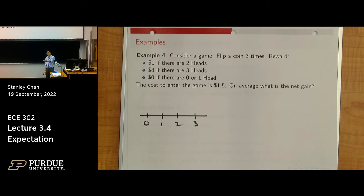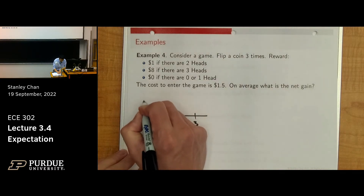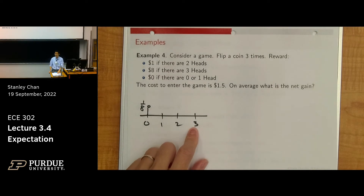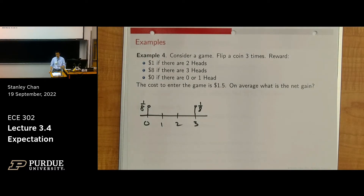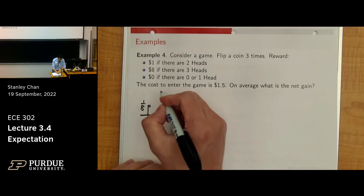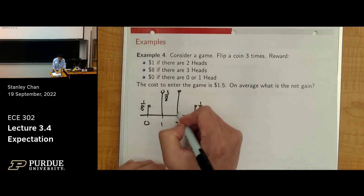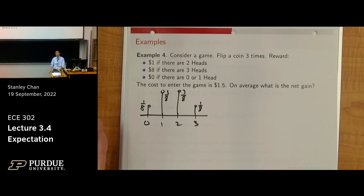Flipping the coin three times — the probability of getting three tails is 1/2 times 1/2 times 1/2 equals 1/8. The probability of getting three heads is also 1/8. The probability of getting exactly one head: head-tail-tail, tail-head-tail, or tail-tail-head — that's 3/8. And 2 heads is similarly 3/8. So we have the probability mass function for this experiment.